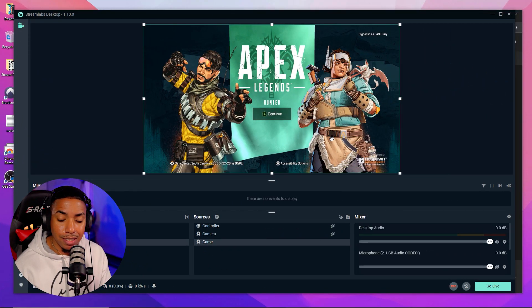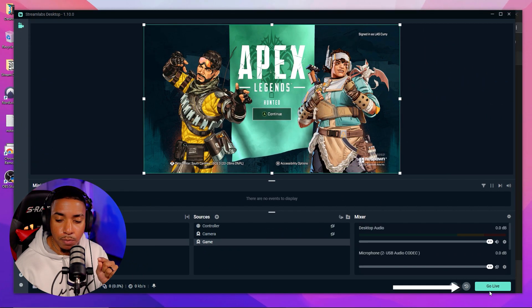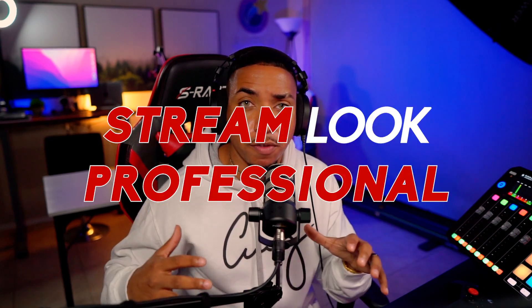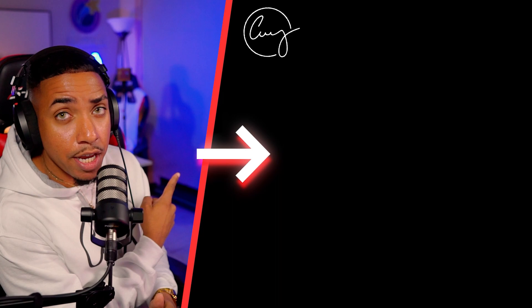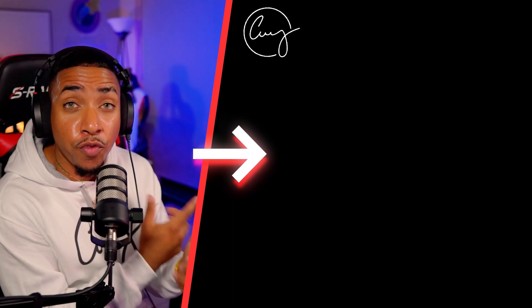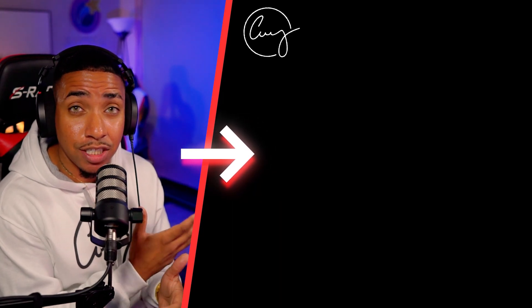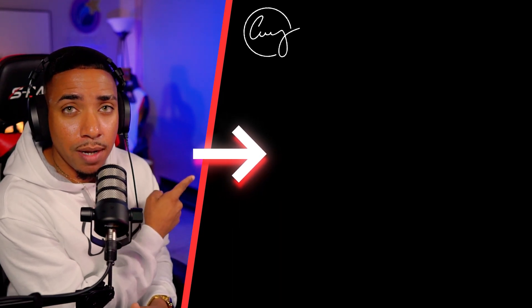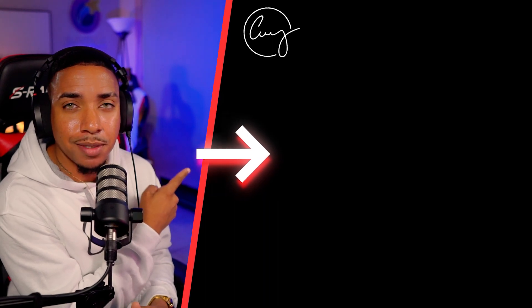Once you've got everything set up, simply hit 'Go Live' and that's going to push your stream over to YouTube. If you want to learn how to add overlays to make your stream look professional on YouTube, click the video right here where I give you free overlays and show you step-by-step how to set them all up inside of Streamlabs.